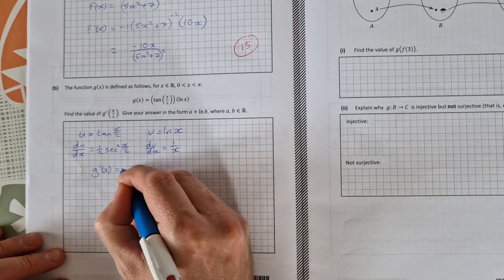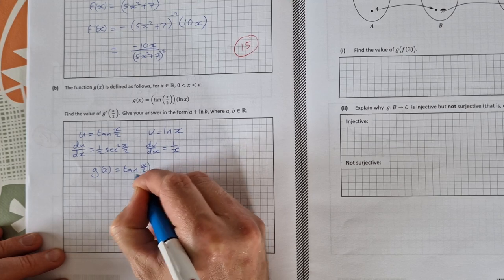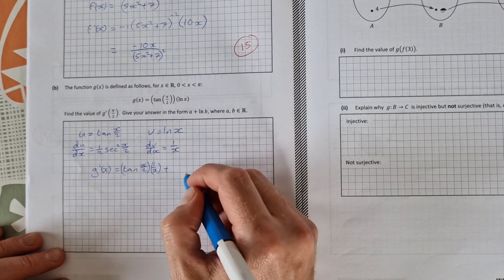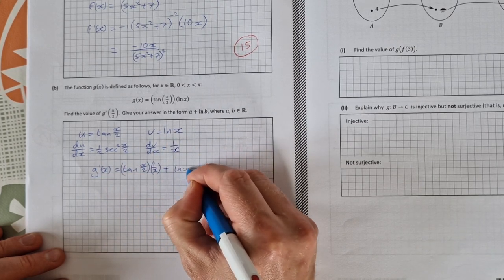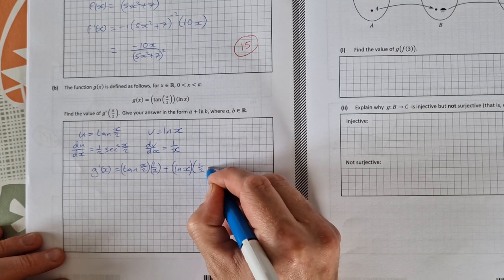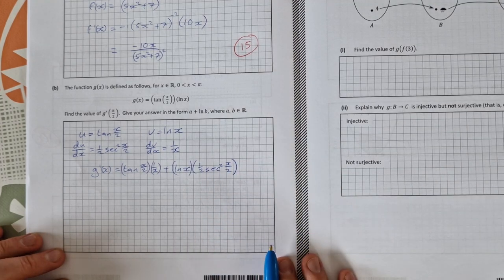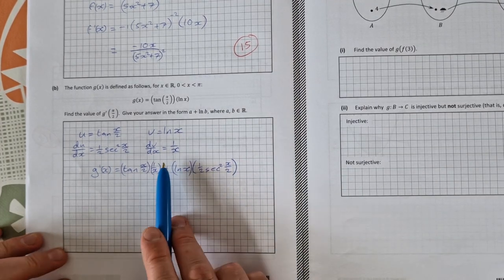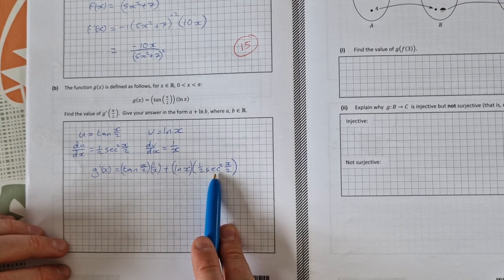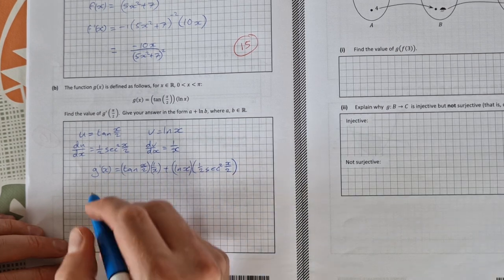So that's going to be tan of x over 2 times 1 over x plus the natural log of x times a half secant squared x over 2. Now for this then you don't really need to simplify right now, we can just sub in π over 2 for x straight away and simplify as we go.